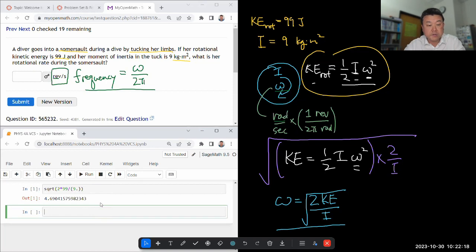So let me make sure it does decimal approximation. 4.690. So now if you put this in, it'll say it's wrong because that's in radians per second. I need it in revolutions per second.